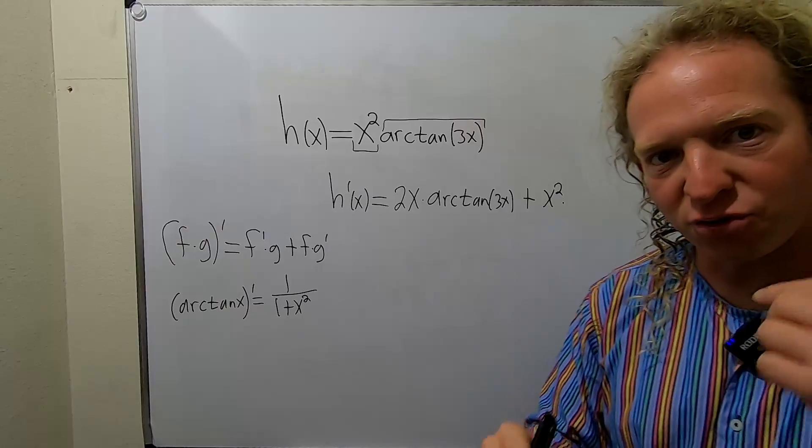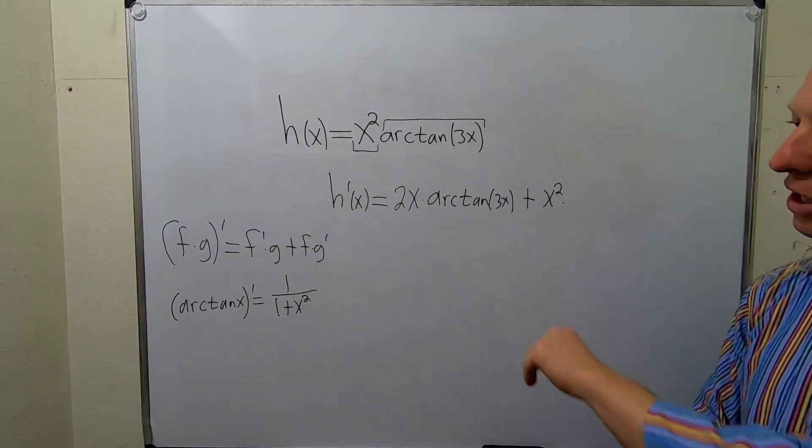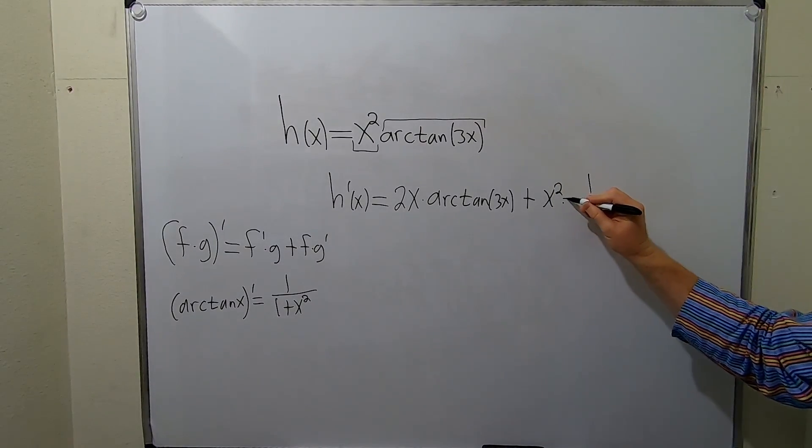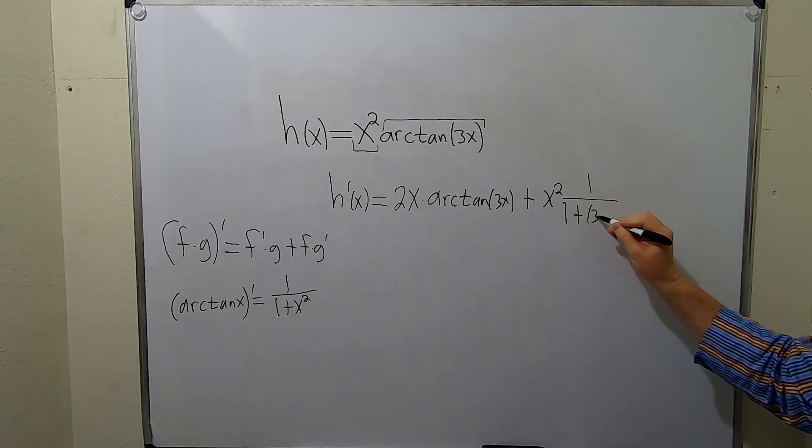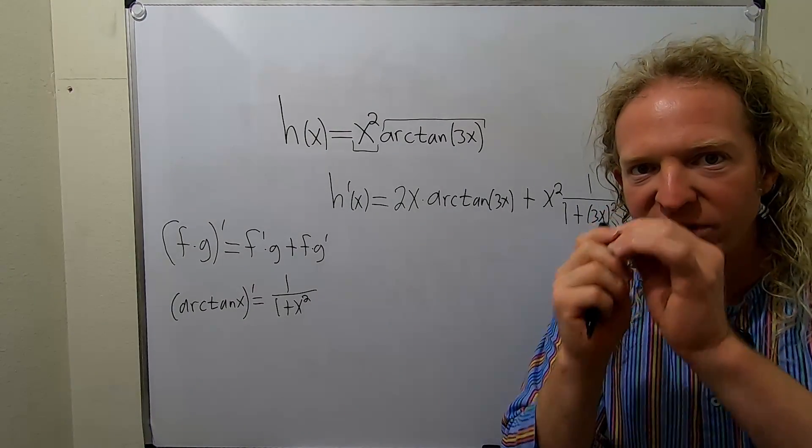times the derivative of the arctangent of 3x. So the derivative of arctangent is 1 over 1 plus x squared. Here it's 1 over 1 plus 3x squared, times the derivative of the inside.